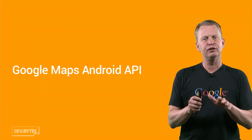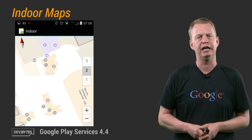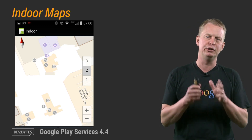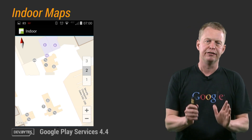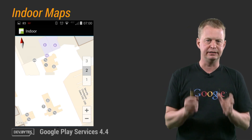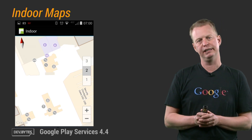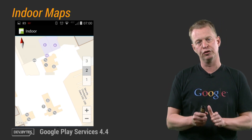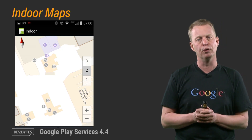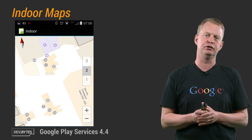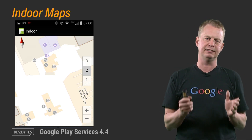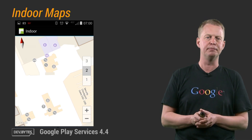Now let's look at the Google Maps Android API, starting off with indoor maps, where you can select the floor programmatically, detect if a new building comes into focus, and also get the active building and floor. This is, for example, the second floor of D-Gates at San Francisco Airport.